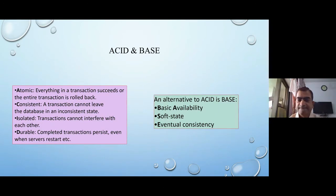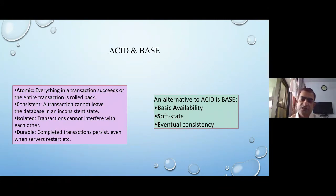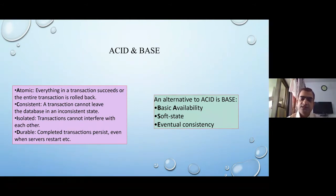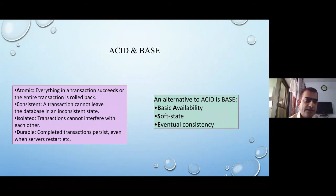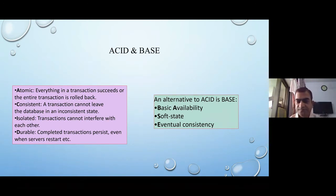An alternative to ACID is BASE. When you talk about BASE-based systems, we are dealing with distributed databases. When you talk about ACID systems, we are talking about centralized database systems. With BASE, availability is a major concern because distribution is done to enhance availability — people from anywhere should get the data. The BASE properties are: basic availability, soft state, and eventual consistency. These three things are the de facto standard of BASE-based databases.